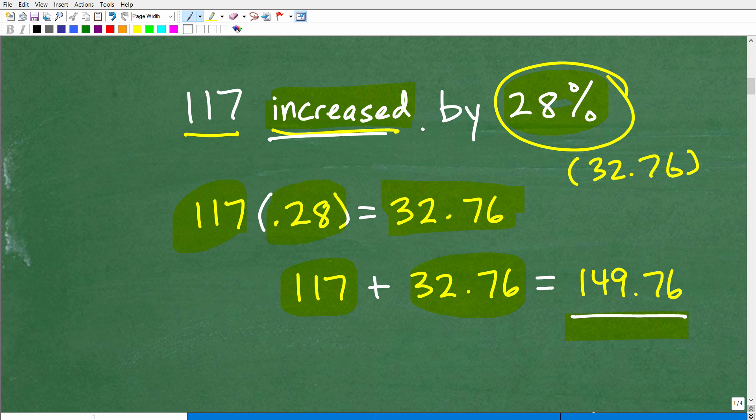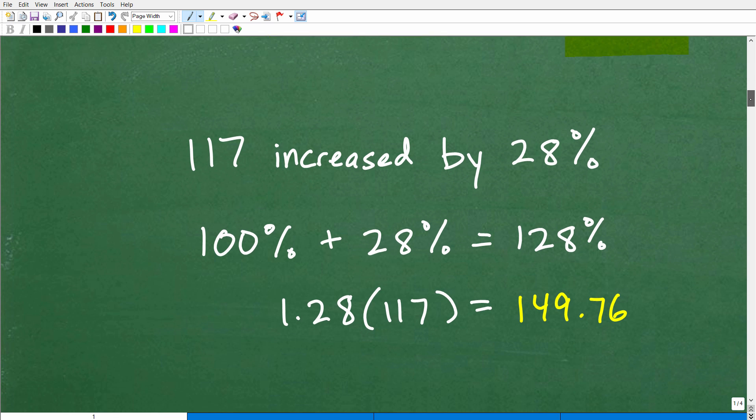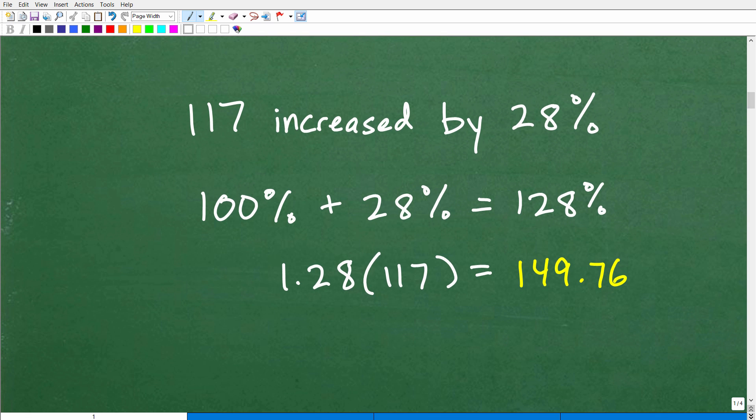And by the way, this particular topic that I'm talking about, obviously, it's a percent, but it's kind of a subtopic of percent, a percent of increase. And we have another thing called percent of decrease. But let's take a look at another way we could approach this problem. Okay, so here we've got 117 increased by 28%. So what are we going to do? What do we want to find out?